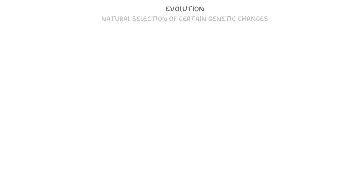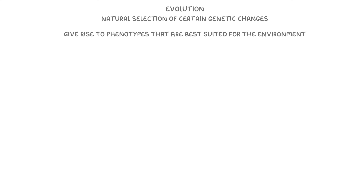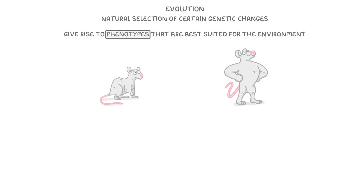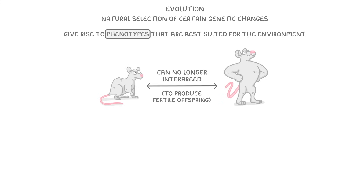In summary, evolution occurs through natural selection of certain genetic changes that give rise to the phenotypes that are best suited to the environment. And given enough time, the phenotypes of two different populations within a species may become so different that they can no longer interbreed to produce fertile offspring, at which point we can say that a new species has been formed.